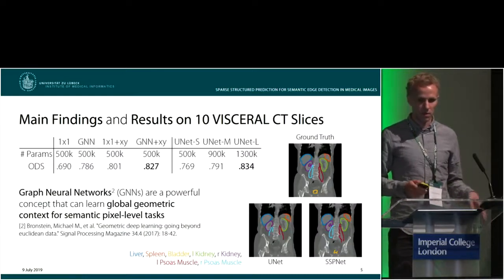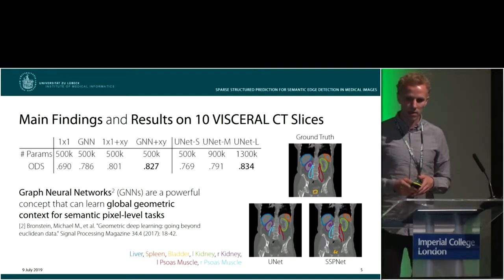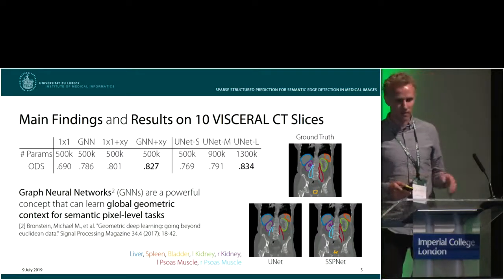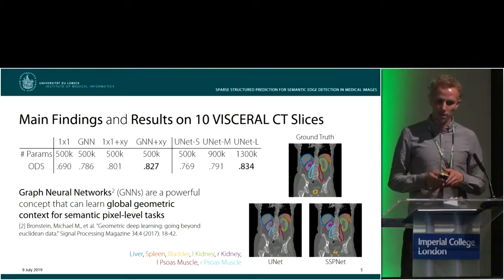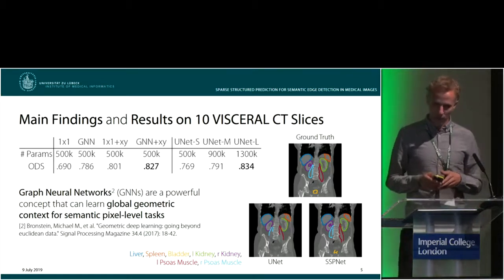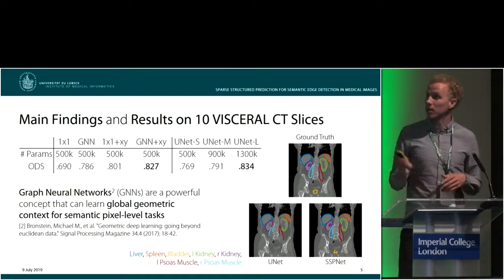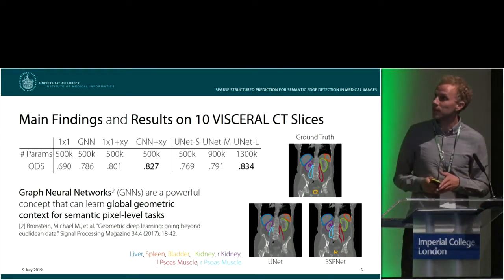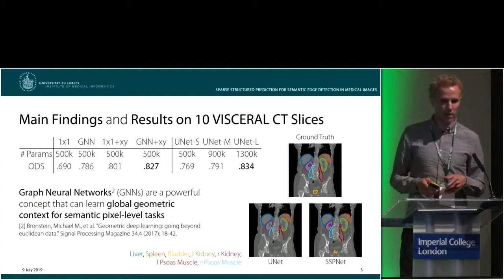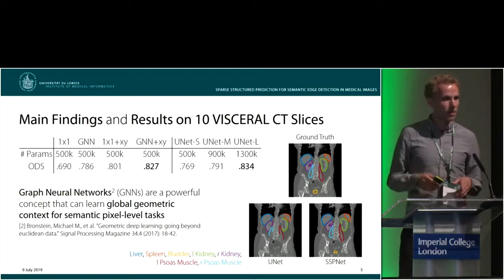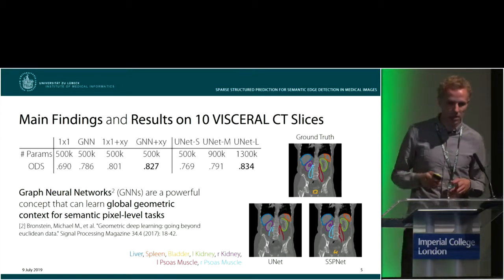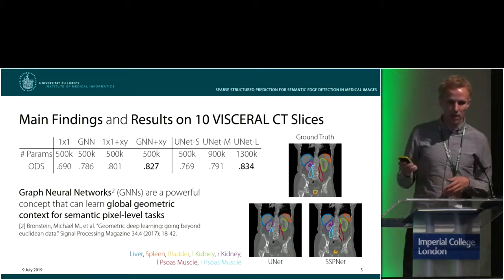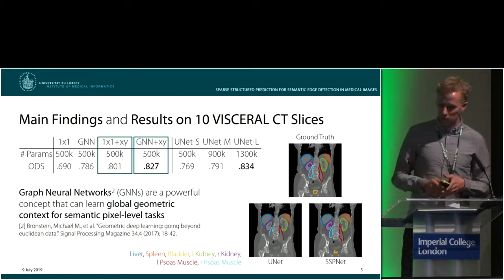Now some results on CT slices from Visceral. We report the number of trainable parameters for each experiment and the F1 scores on a fixed contour threshold referred to as ODS. I would like to highlight two results.